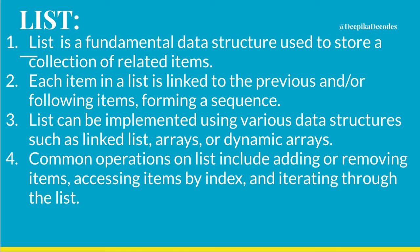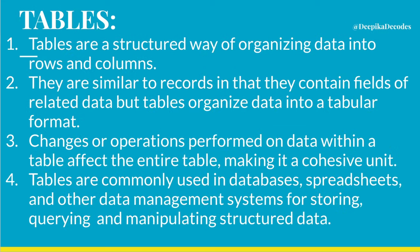Common operations on lists include adding or removing items and accessing items by index. The next data structure type is Table. Tables are a structured way of organizing data into rows and columns.